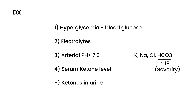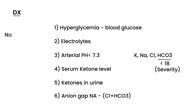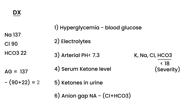One final important diagnostic tool is the anion gap. The anion gap is a calculation: sodium minus the sum of chloride plus bicarb. For example, if sodium is 137, chloride is 90, and bicarb is 22, the anion gap would be 137 minus (90 plus 22), which equals 25. In DKA, the anion gap will be greater than 12.